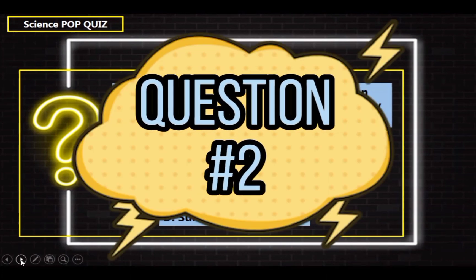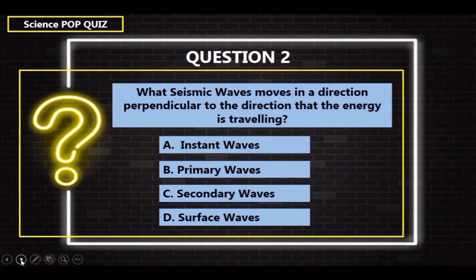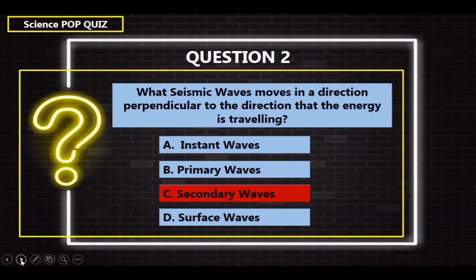Question number 2: What seismic waves move in a direction perpendicular to the direction that the energy is traveling? A. Instant waves, B. Primary waves, C. Secondary waves, D. Surface waves. The correct answer is letter C — Secondary waves.